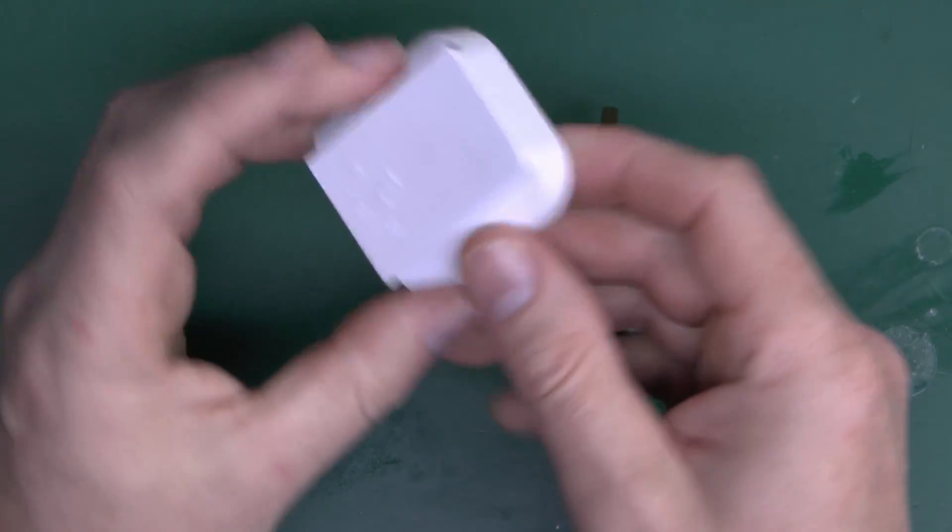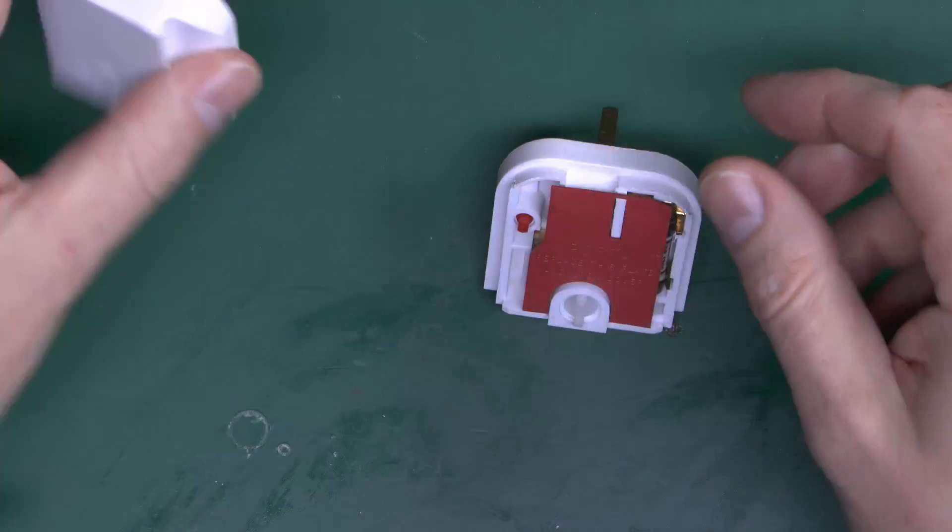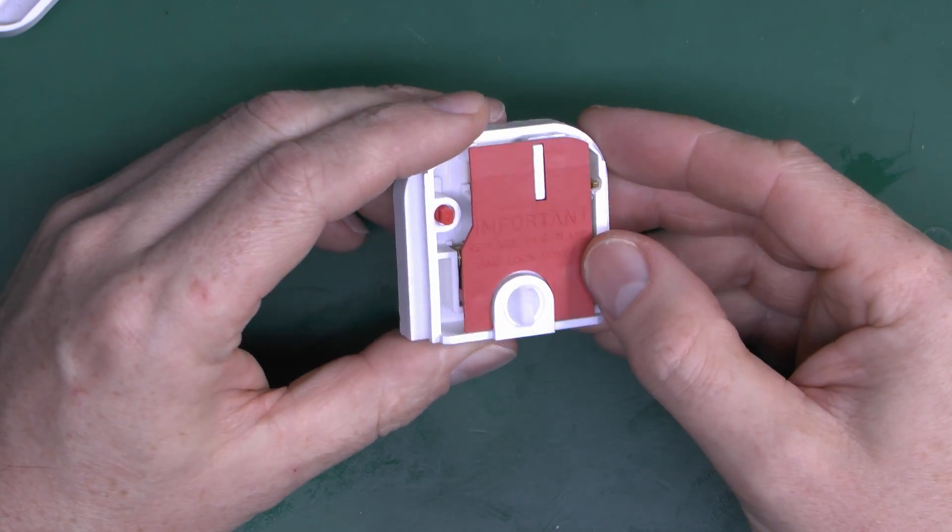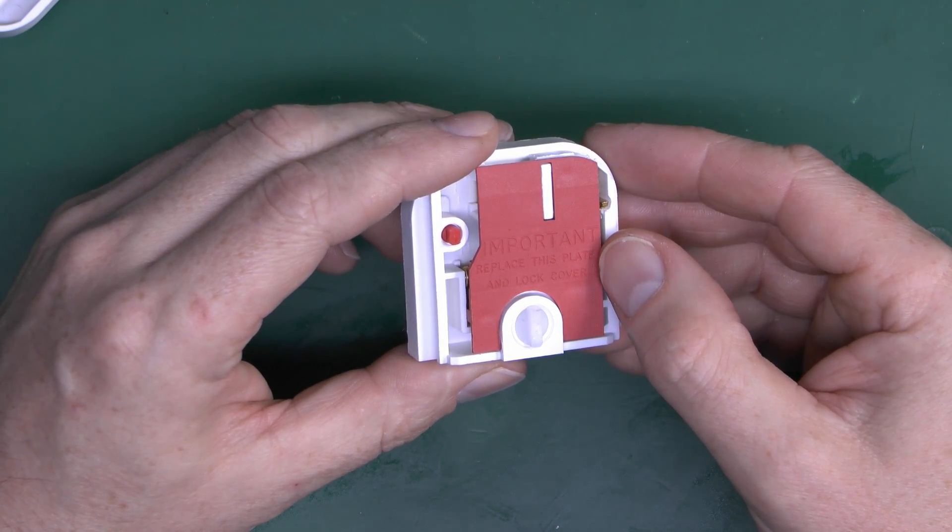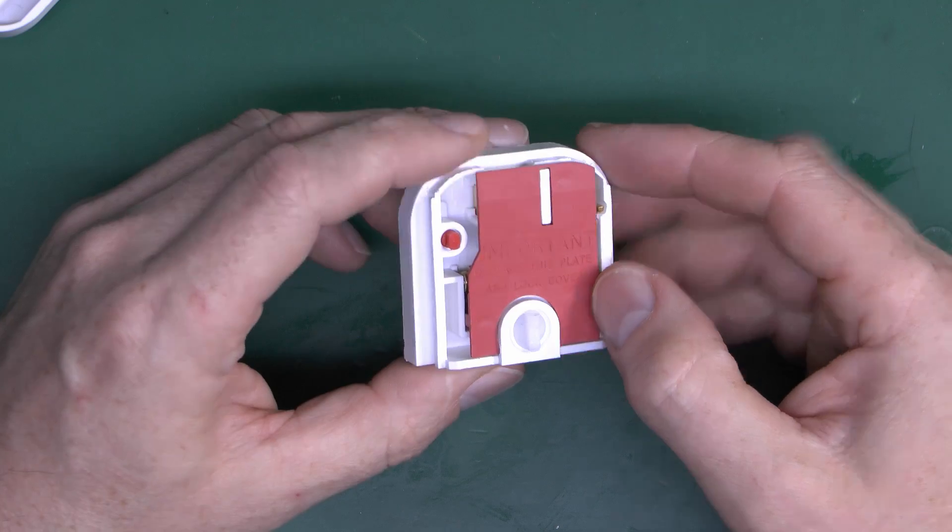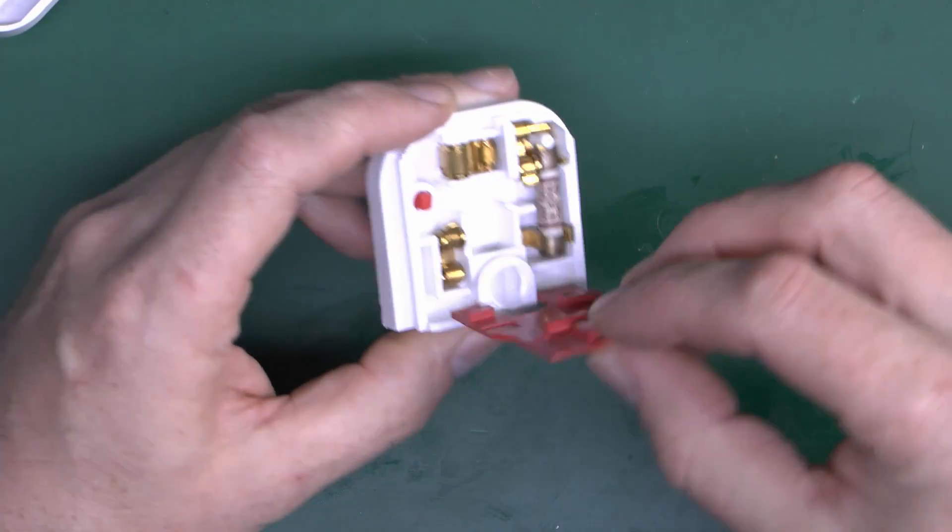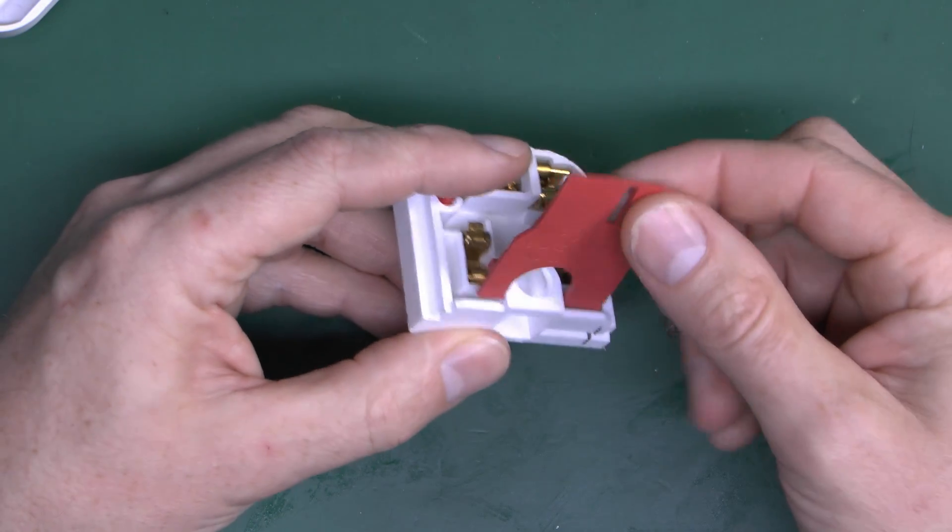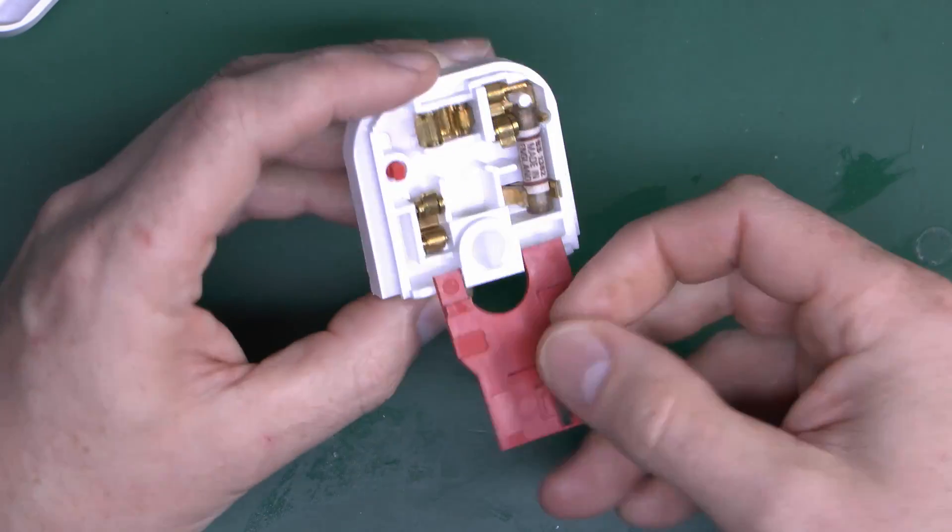So we've got the back piece here, which is just one piece of molded plastic, and then we've got the inner part here. And as it says here, remove this plate, or replace this plate, and lock cover. So in other words, this needs to go back in once you've got it. That piece is actually hinged at the bottom here, and it is retained within the plug body there.